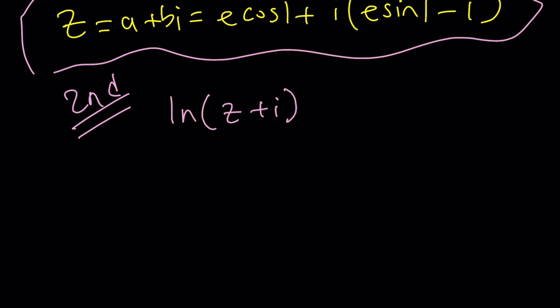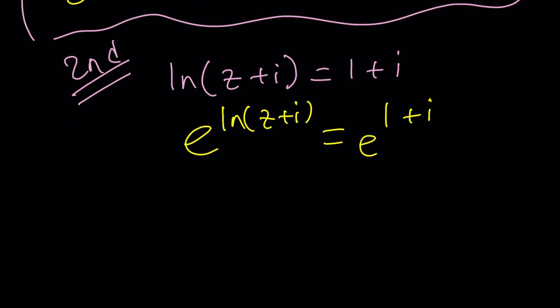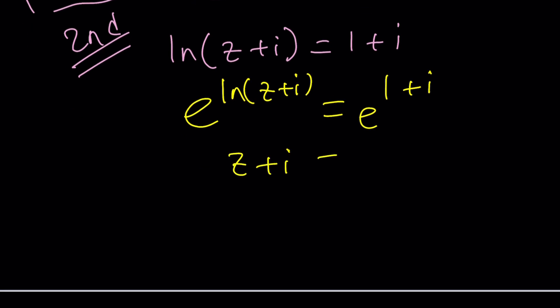ln z plus i equals 1 plus i. Some of you are going to be like, oh, I did it in 30 seconds. I used the second method. E to the power ln z plus i is E to the power 1 plus i. E to the power ln something is something. So this is z plus i equals E to the power 1 times E to the i. Subtract i, and you're done. Z equals E times E to the i minus i.